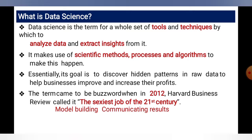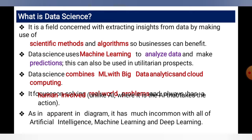The term 'data science' became a buzzword in 2010 when the Harvard Business Review called it the sexiest job of the 21st century, involving model building and communicating results. It is a field concerned with extracting insight from data using scientific methods and algorithms so that business can benefit. Data science can also be used for utilitarian prospects and combines machine learning with big data analytics and cloud computing.